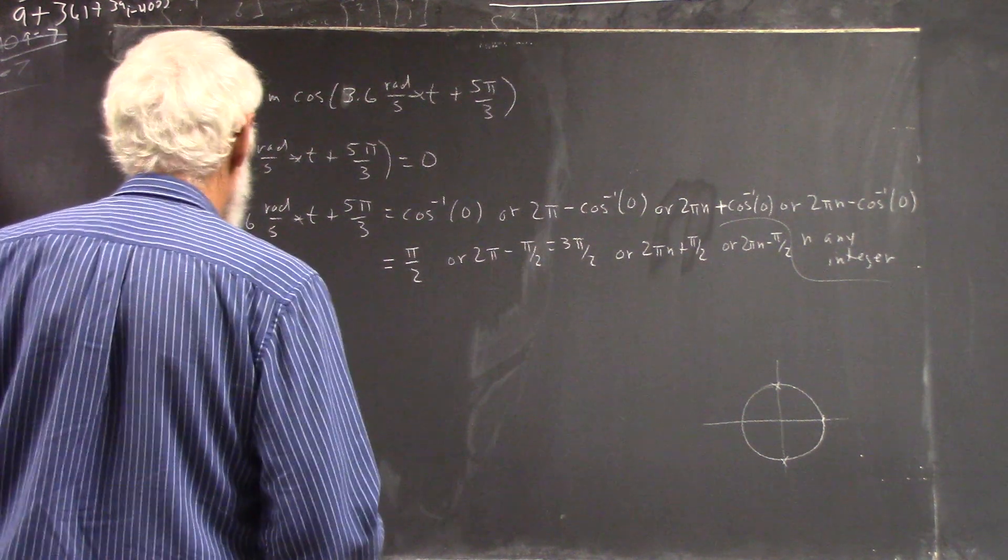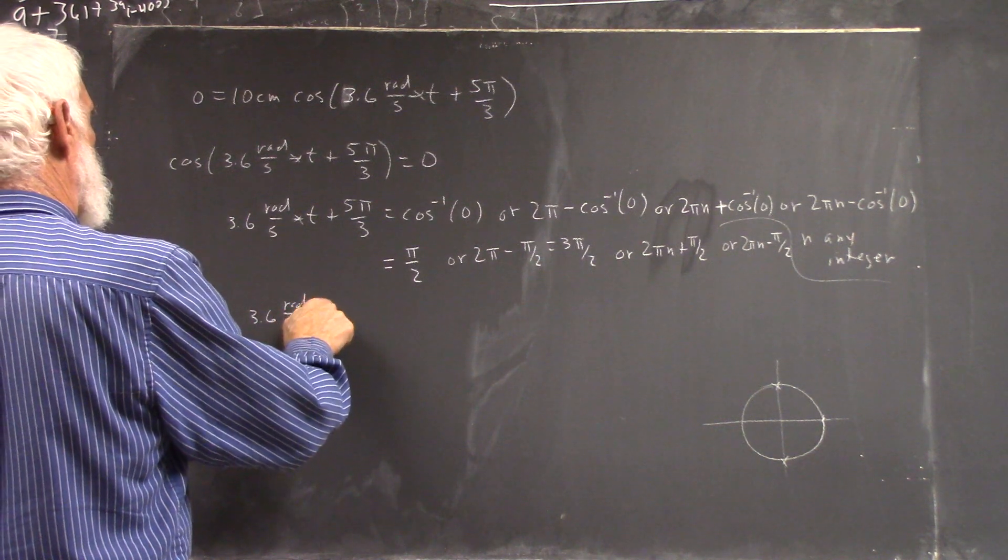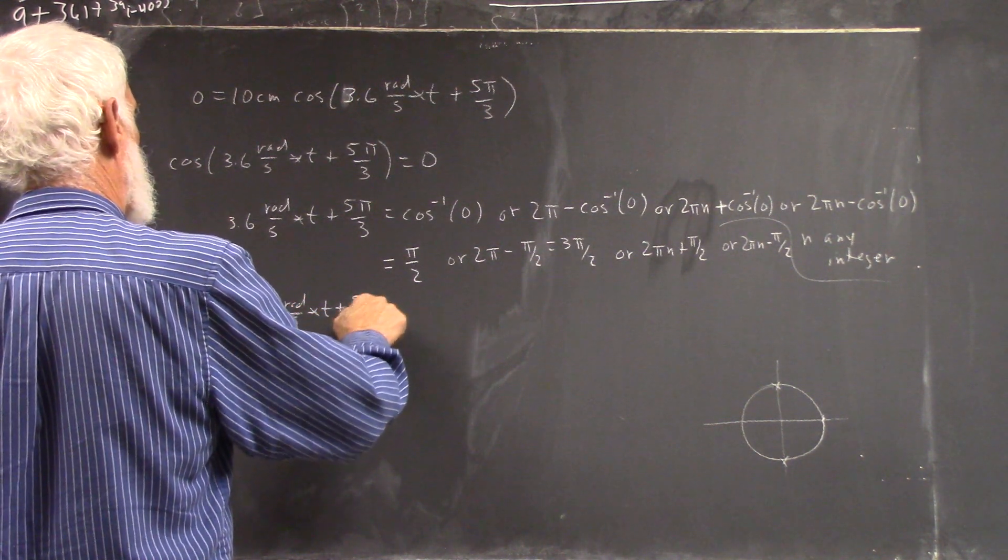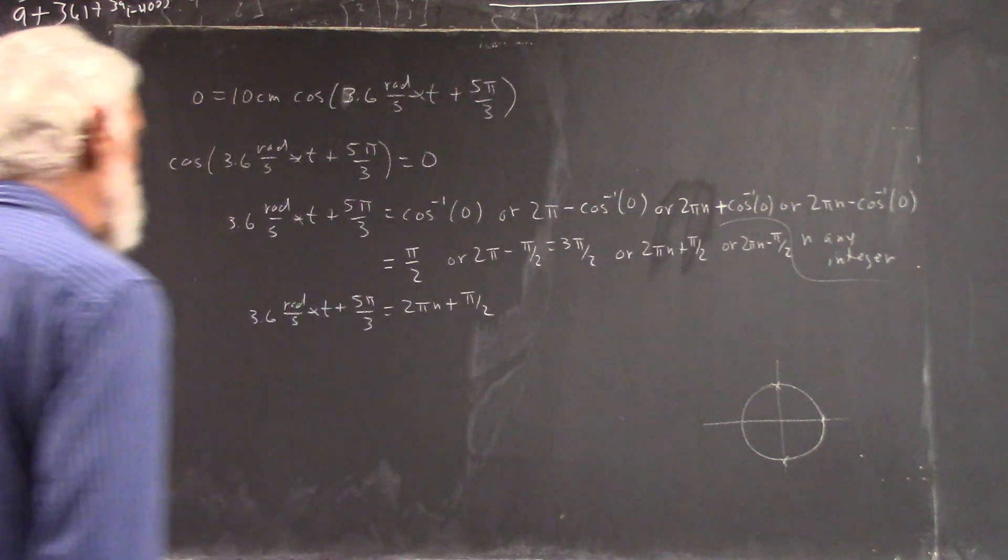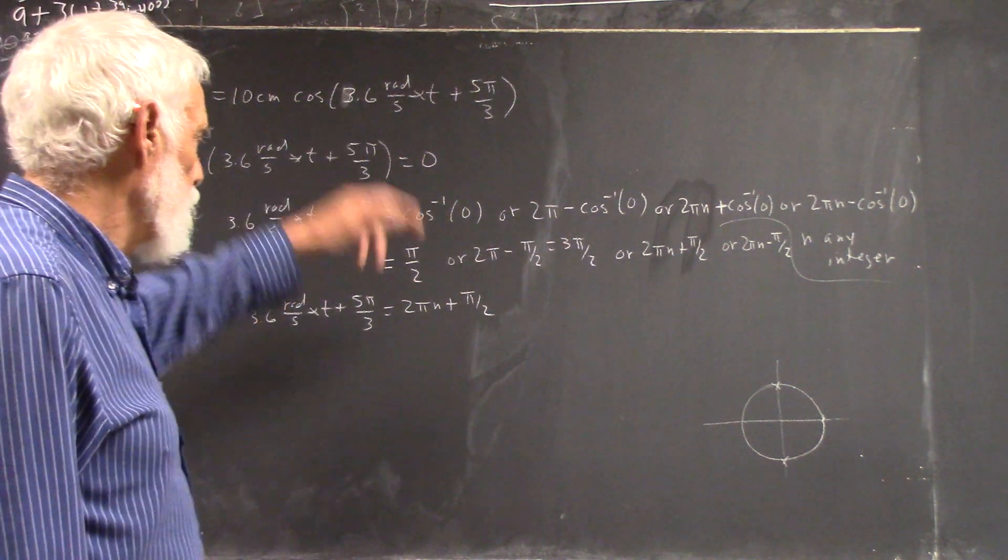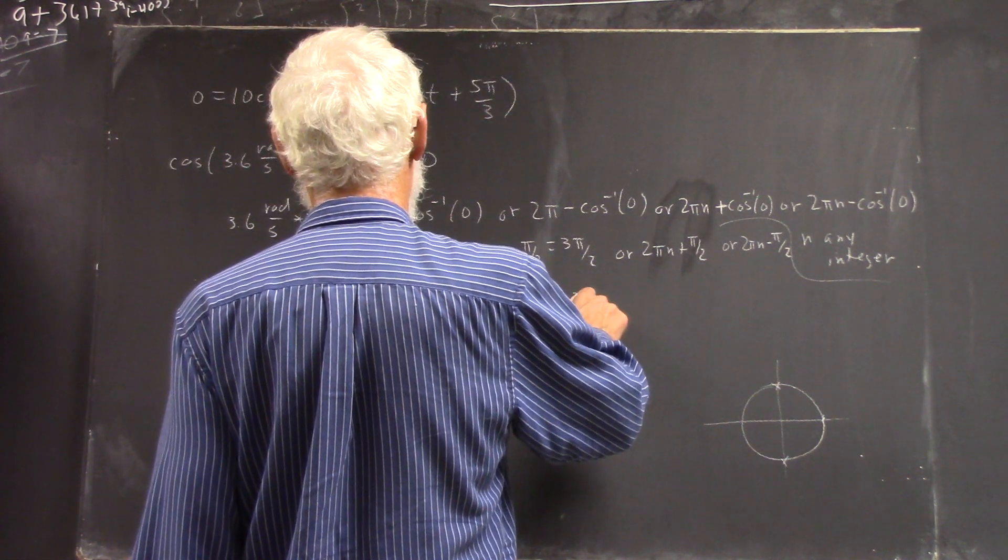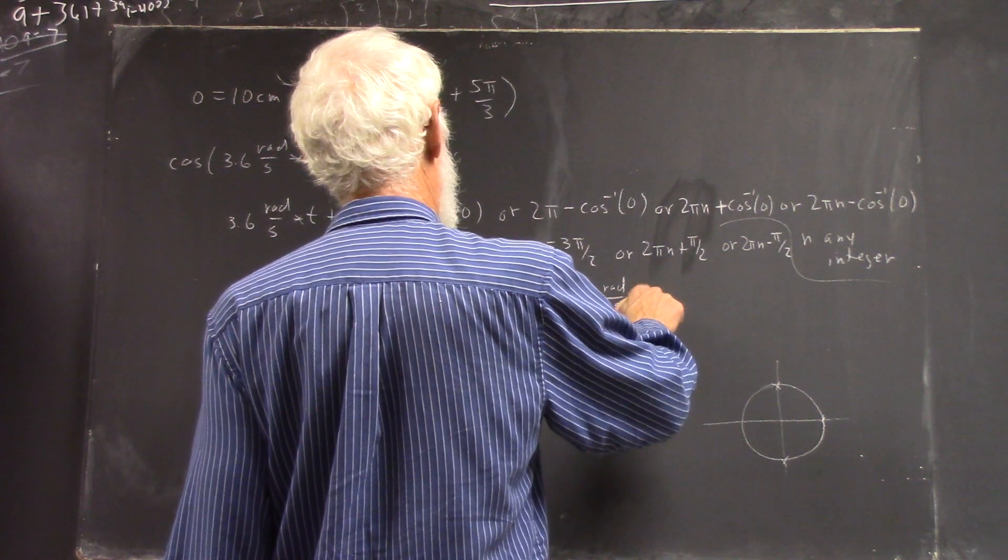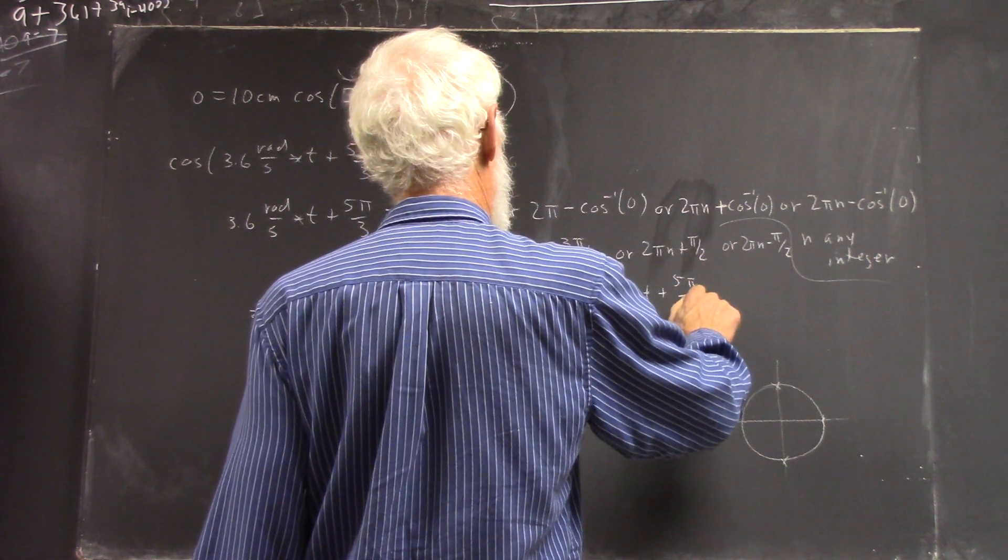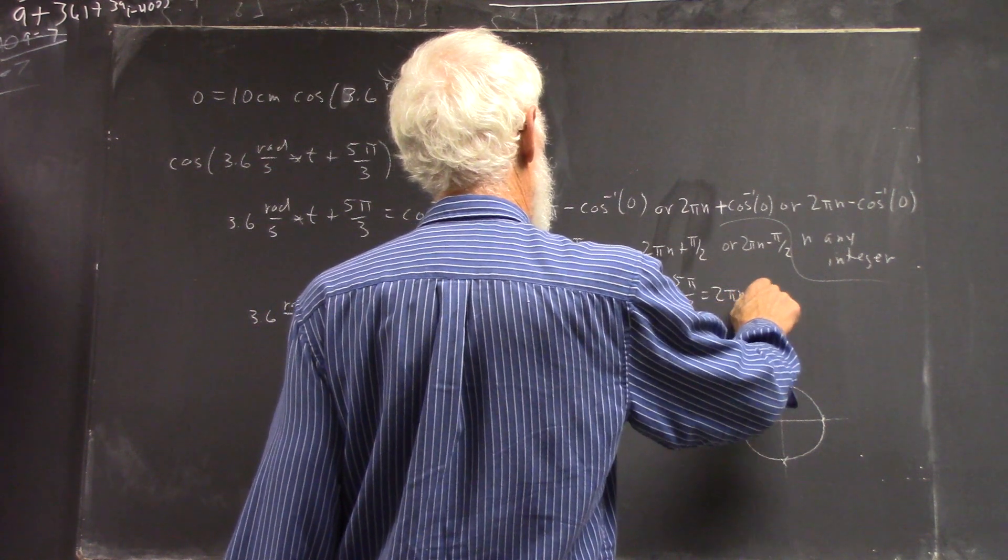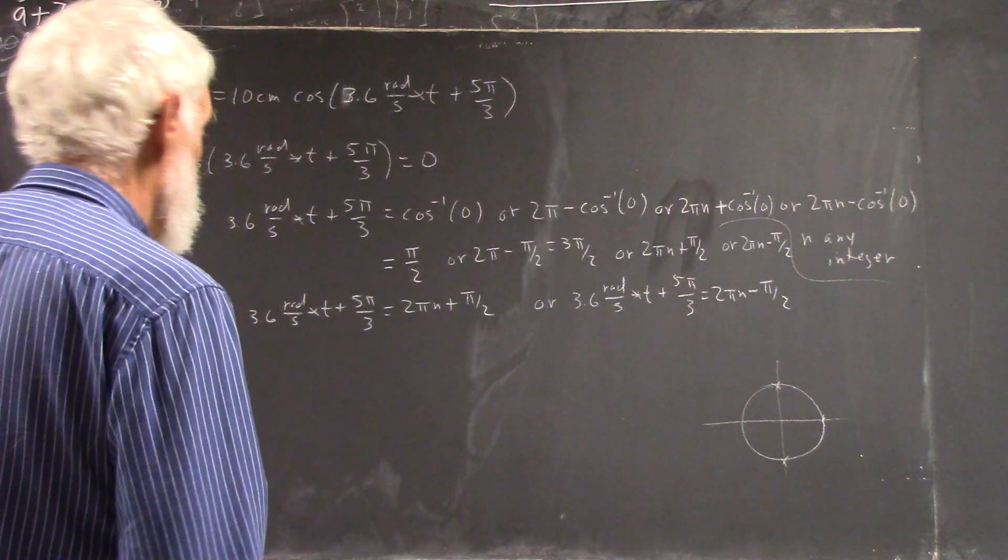So, in general, your solution is 3.6 radians per second times t plus 5 pi over 3 equals 2 pi n plus pi over 2 or 2 pi n minus pi over 2. Those equations are easy enough to solve.